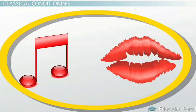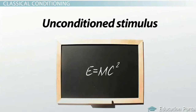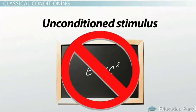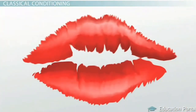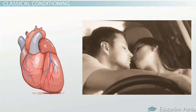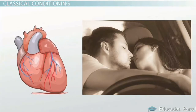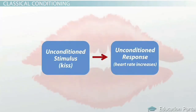The first stimulus you encounter is called the unconditioned stimulus, which produces a response without any previous learning — this response is called the unconditioned response. For example, imagine a kiss. Kissing creates involuntary arousal responses, such as an elevated heart rate. This is a natural, automatic response that is not learned. The unconditioned stimulus is the kiss, and the elevated heart rate is the unconditioned response.